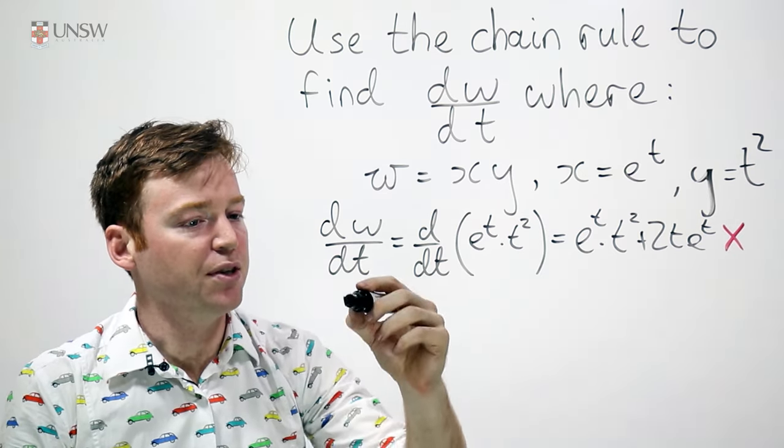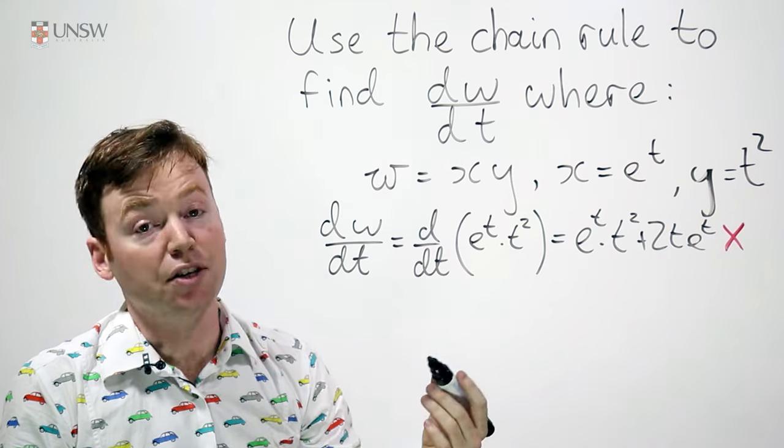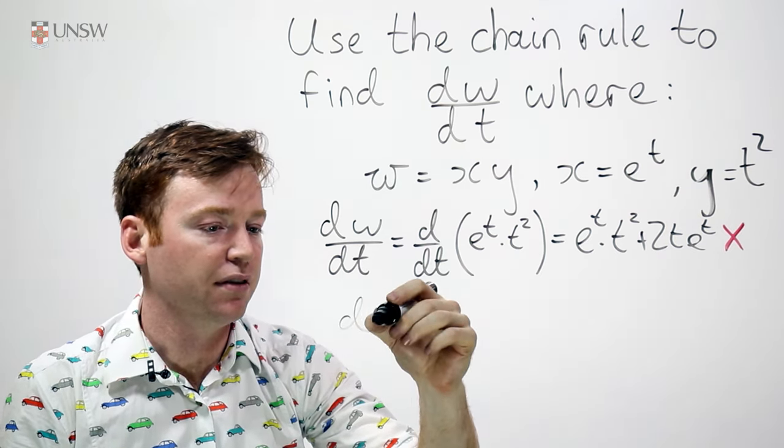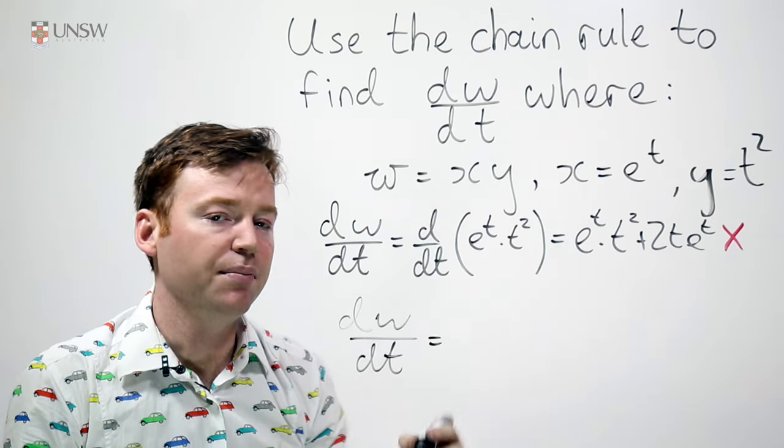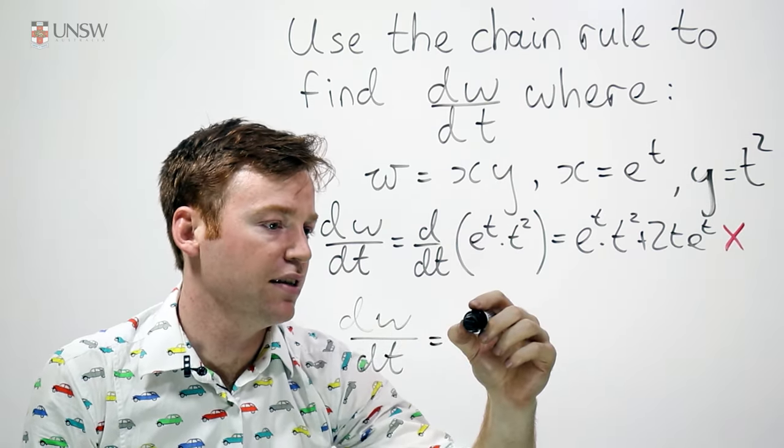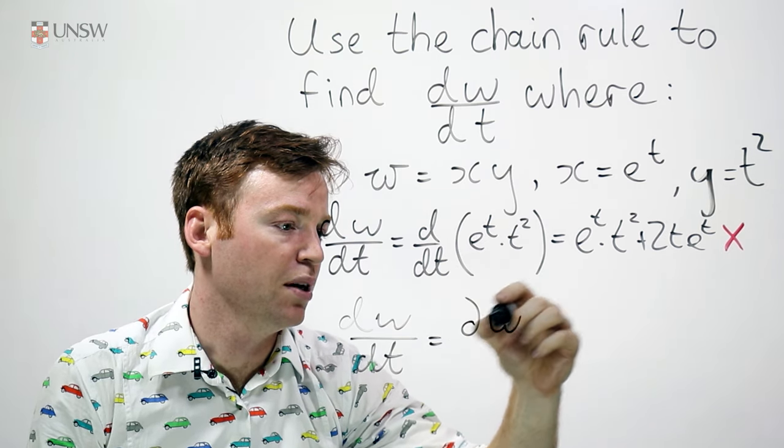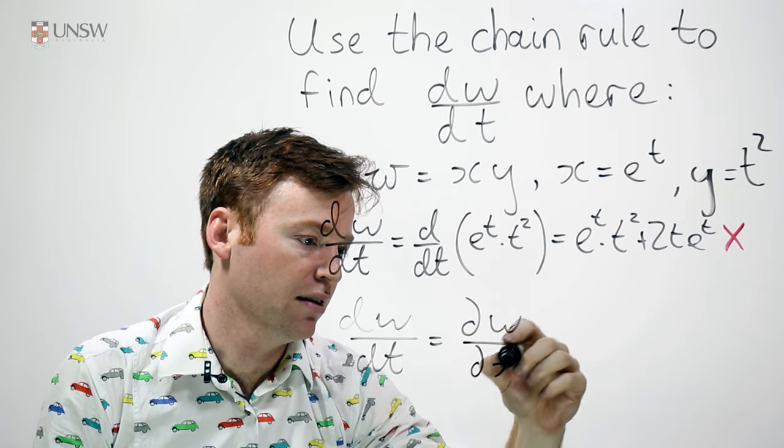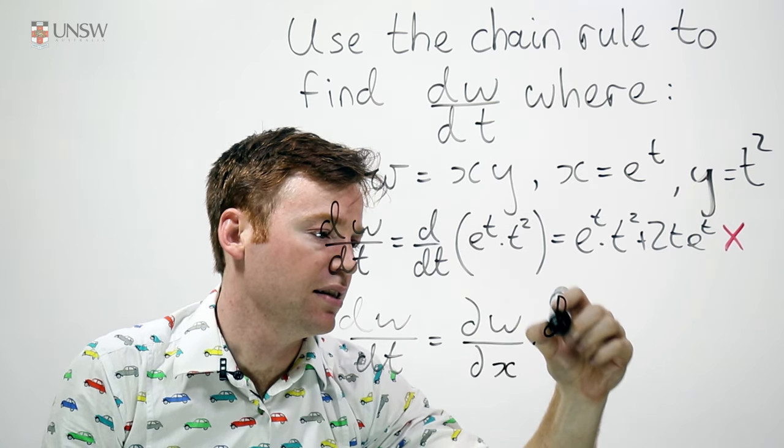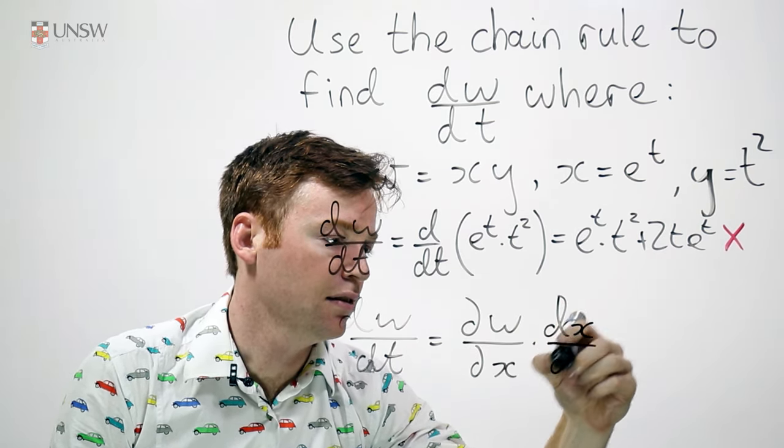The chain rule says when you have a function of, in this case, two variables x and y, the derivative dw/dt can be expressed like this. It's the partial derivative of w with respect to its first variable, in this case x, times dx/dt.